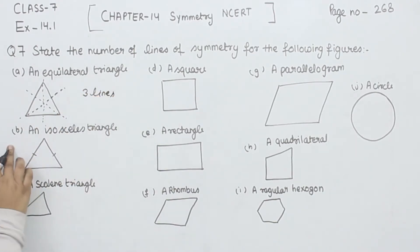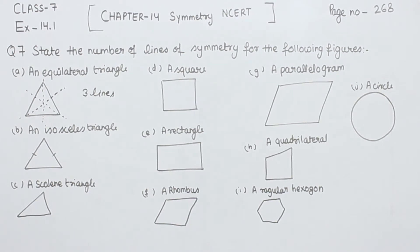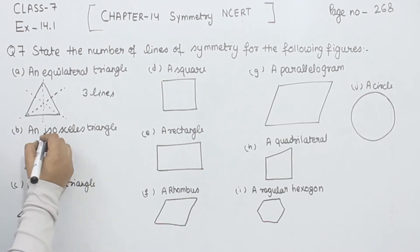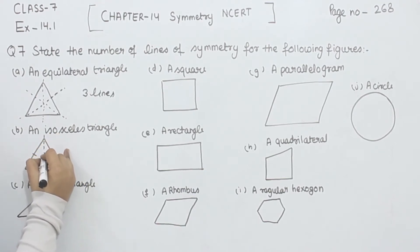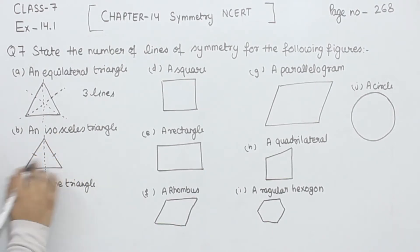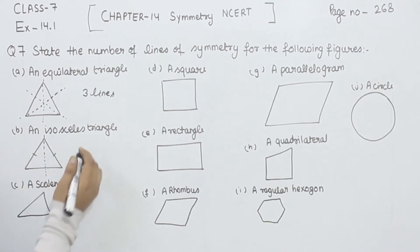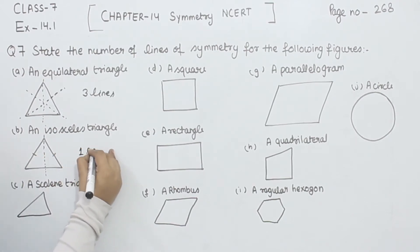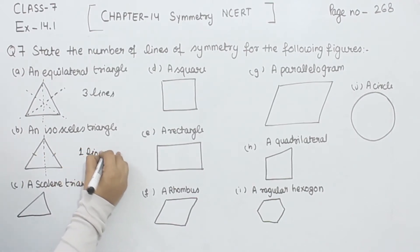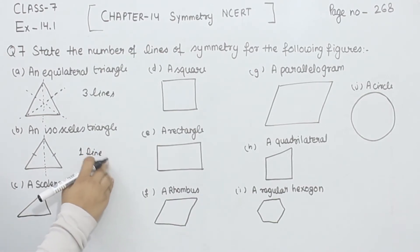Now, coming to the second one, which is an isosceles triangle. In this one, two sides are equal to each other — this one and this one. So we are going to create the line of symmetry between them. This will have only one line of symmetry.